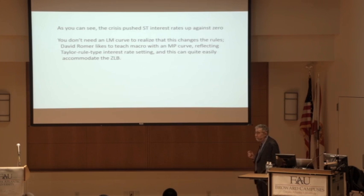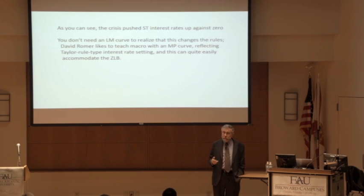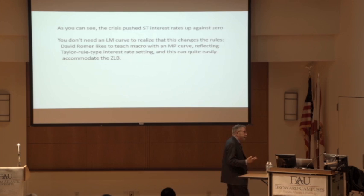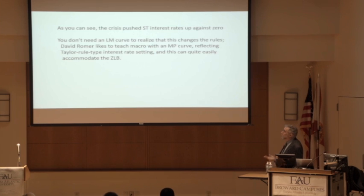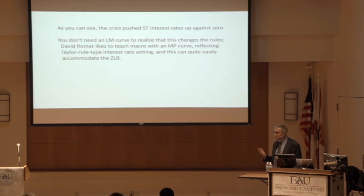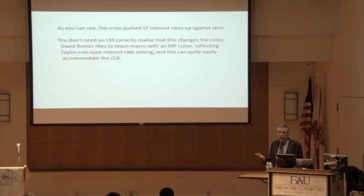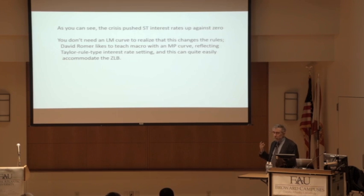What actually happened? The crisis pushed short-term interest rates to zero. We hit the zero lower bound around December 2008 — we're almost at the fifth anniversary — which is a very weird world, and many people have still not been able to wrap their heads around what that means. One of the things it means is that some of the rules on the effects of fiscal policy change. Back in 2009, a lot of people were saying: look at all the amount the federal government's going to have to borrow — that's going to send interest rates soaring. And actually, if we'd been anywhere near full employment, that probably would have been right.